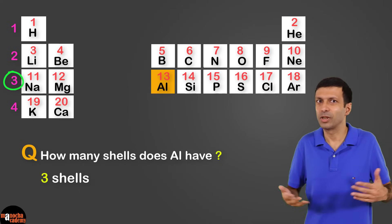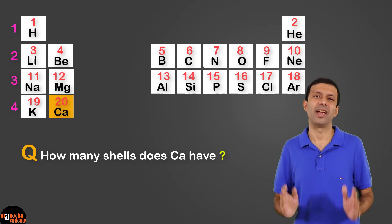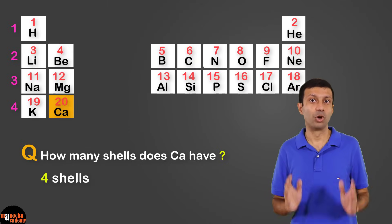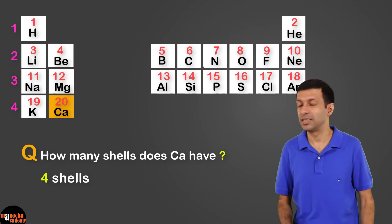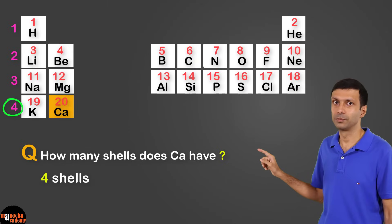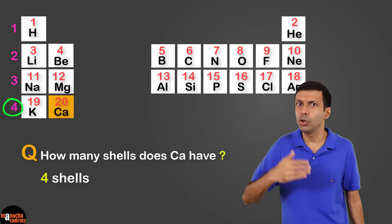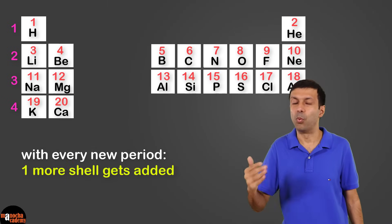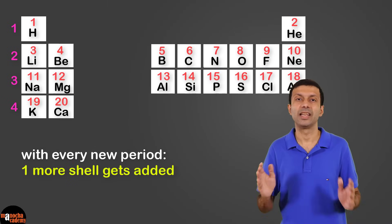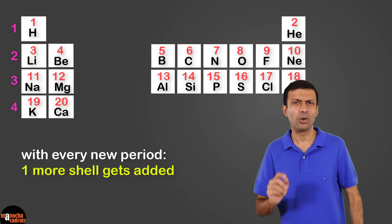And what about calcium? Correct, 4 shells - it's in period number 4. So with every new period, one more shell is being added.